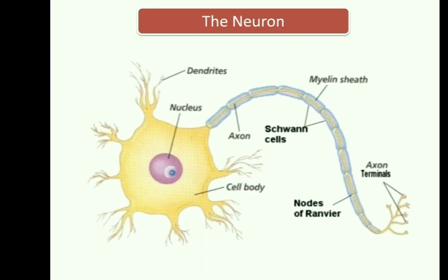Looking at the generic view of a neuron, you will find it consists of dendrites, a cell body, an axon, Schwann cells, a myelin sheath, and the node of Ranvier. Neurons are classified as sensory neurons, motor neurons, and interneurons.